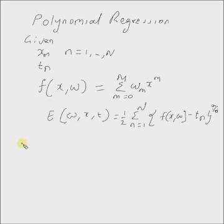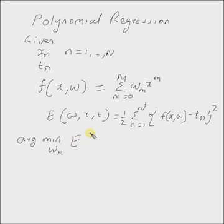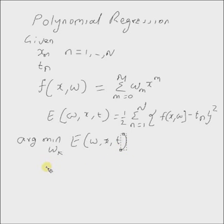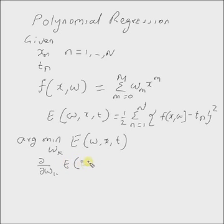The formal optimization problem can be written as: argmin with respect to w_k of the quadratic error function E(w, x, t). The solution to this simple quadratic optimization problem is given by setting the derivative with respect to w_k of the error function E(w, x, t) equal to zero.